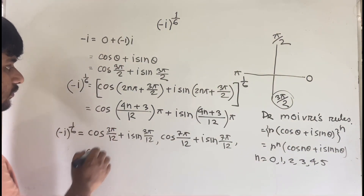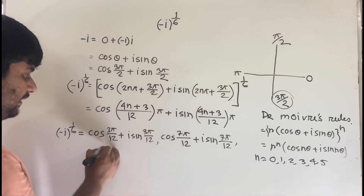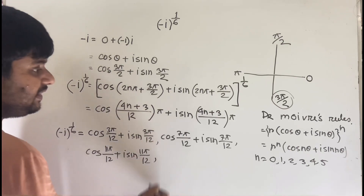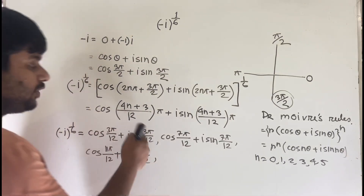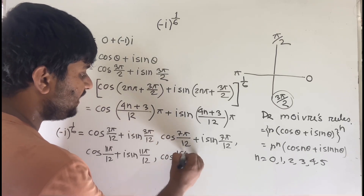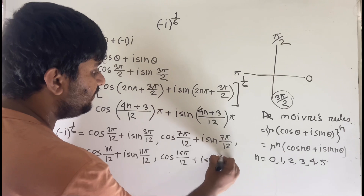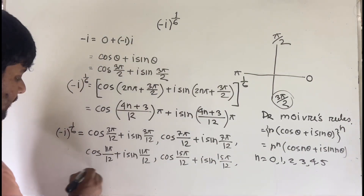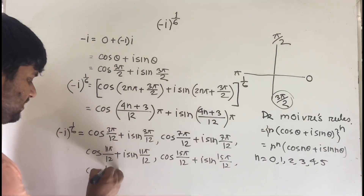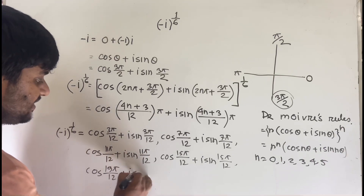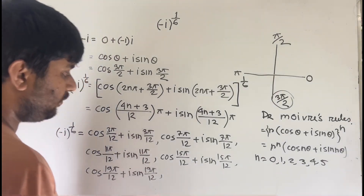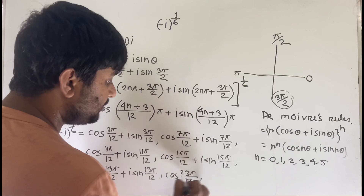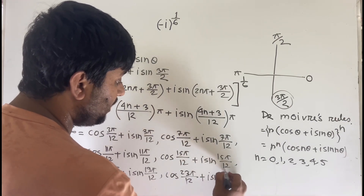For n = 2: cos(11π/12) + i·sin(11π/12). For n = 3: cos(15π/12) + i·sin(15π/12). For n = 4: cos(19π/12) + i·sin(19π/12). For n = 5: cos(23π/12) + i·sin(23π/12). These are all six roots.